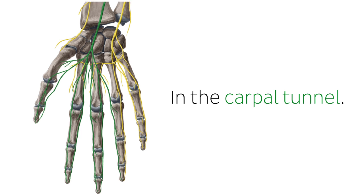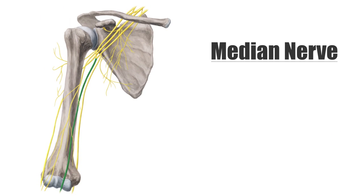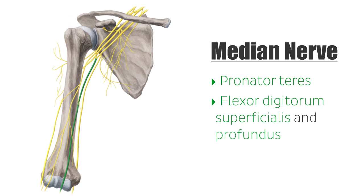The median nerve provides motor branches to many muscles of the upper extremity, including the pronator teres, flexor digitorum superficialis and profundus, and most of the thenar muscles.